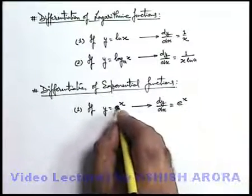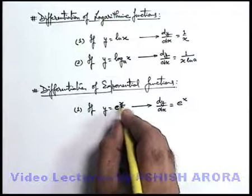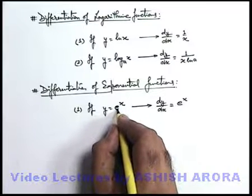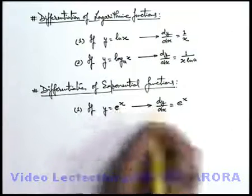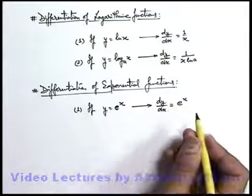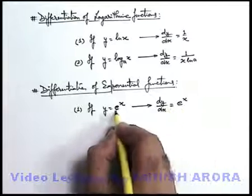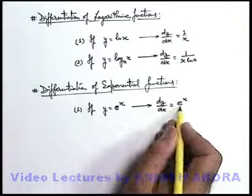e to power x, the power of x of an exponent value which we've studied that it is a constant. Its differentiation is the same, e to power x. This is the only function of which the differentiation remains same.